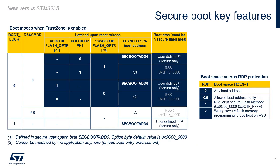This slide summarizes the boot options when TrustZone is enabled. When BOOTLOCK equals 1, the boot address is unique and defined by secure user option SECBOOTADD0, whatever the other parameters. When RSS_CMDR is non-null and BOOTLOCK equals 0, boot in Root Security Services or RSS is performed. When RDP is greater than 0, the boot code must be located in a secure area. When TrustZone is disabled, only the center of the table is relevant, with non-secure NSBOOTADD0 replacing SECBOOTADD0 and non-secure NSBOOTADD1 replacing the RSS fixed address.